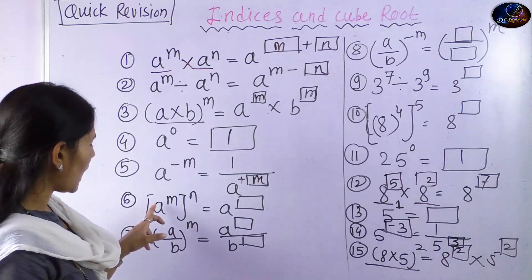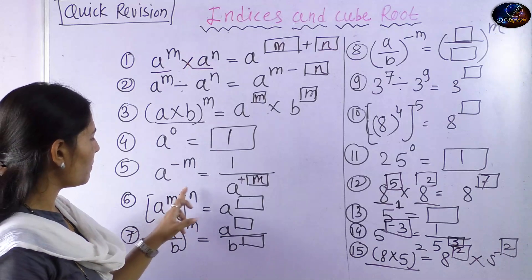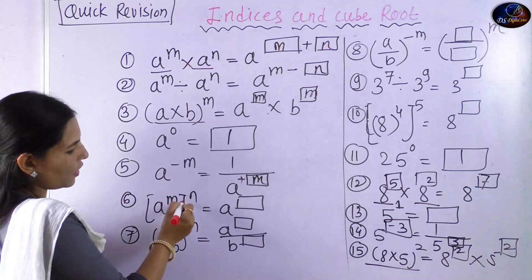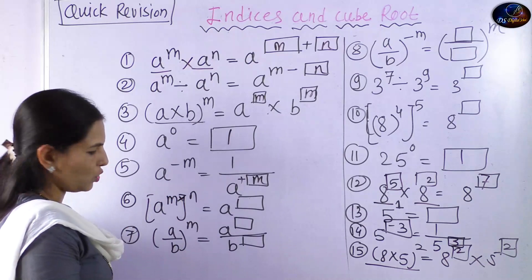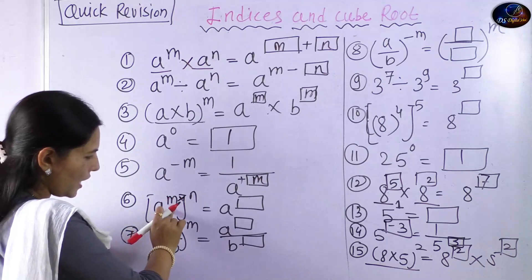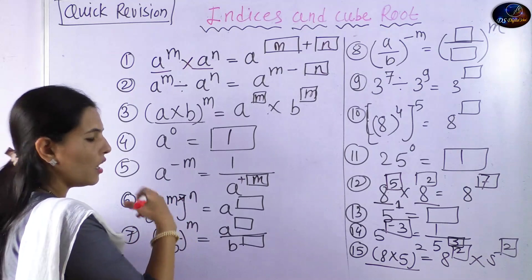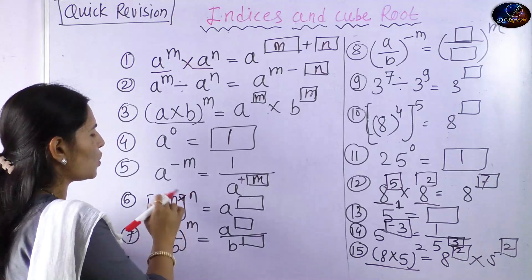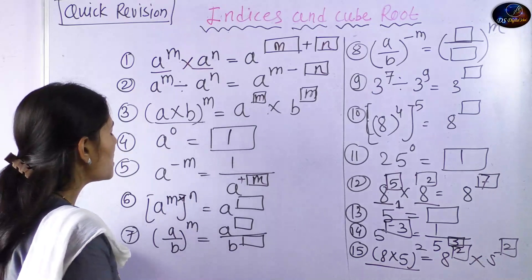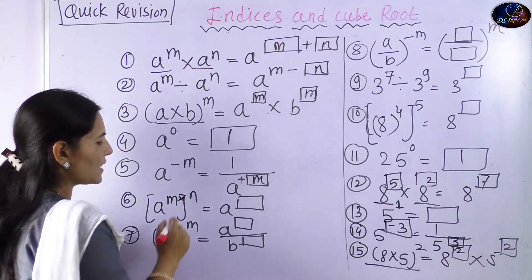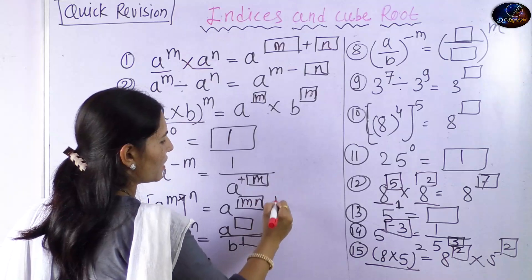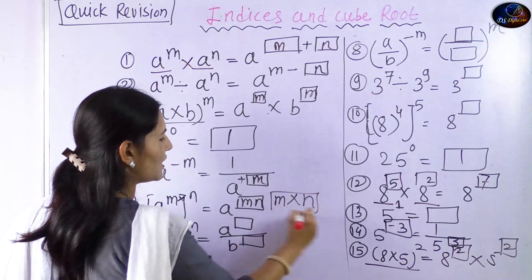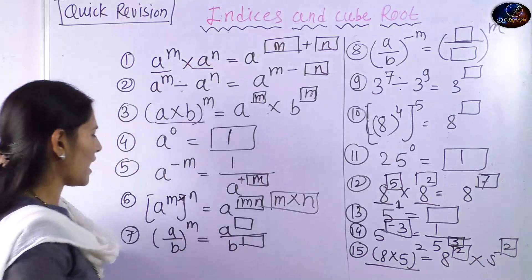Next rule: a raised to m, the whole bracket raised to n. What do we do? We multiply the two exponents. So a raised to m, bracket raised to n, is equal to a raised to m into n. You must know this answer.